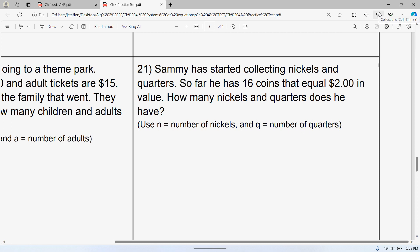So for 21, this one's talking about collecting nickels and quarters. So far, they have 16 coins total. It's up to $2. So how many nickels and how many quarters do they have? Well, the first equation is the same equation as a lot of the other ones where you just take your variables and add them together, and that's equal to the total number of coins. If you take the number of quarters, the number of nickels, add those together, that's 16.